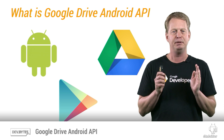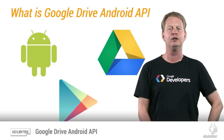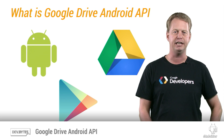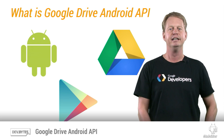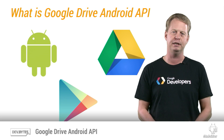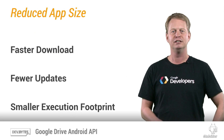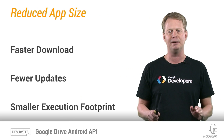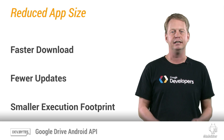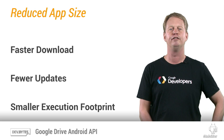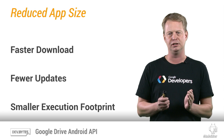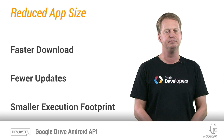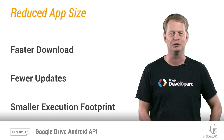One feature that makes this API very useful is that it's incorporated into Google Play Services, a core part of the Android device. And this has several important benefits. First of all, this greatly reduces the app size, which is perfect, since it enables the app to be downloaded faster, it does not need to be updated as often, and it makes the app have a smaller execution footprint. For example, it will not take up as much memory, which is always a great thing.